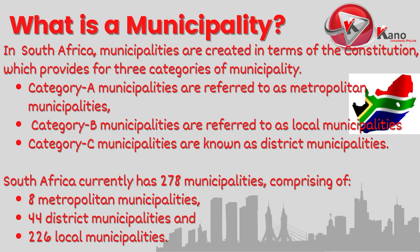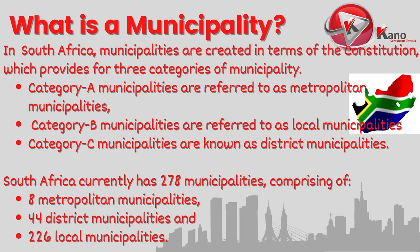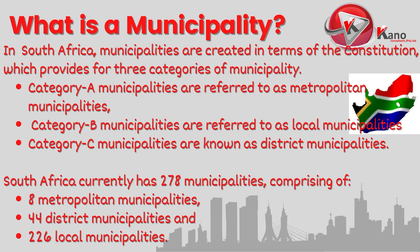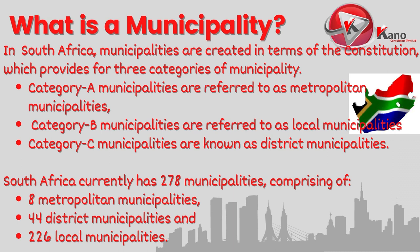In the South African context, municipalities are created in terms of the Constitution, which provides for three categories of municipality, namely Category A, Category B and Category C municipalities. Category A municipalities are referred to as Metropolitan Municipalities, Category B municipalities are referred to as Local Municipalities, and Category C municipalities are known as District Municipalities.